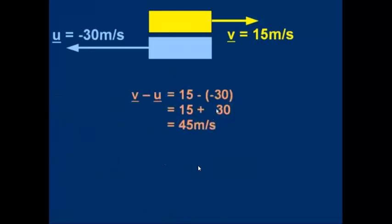An easy way to do it is to use a sign convention for one-dimensional motion. Take to the right as positive and to the left as negative. V is plus 15 metres per second, and U is minus 30 metres per second. V minus U is then simply 15 minus minus 30, which gives us 15 plus 30, which is 45 metres per second. That's nice and easy with a sign convention.